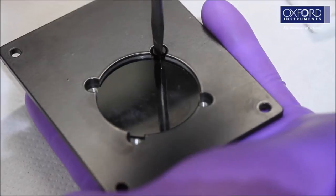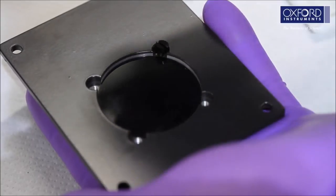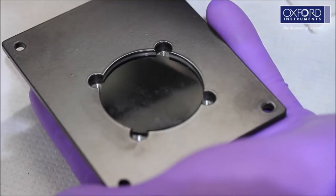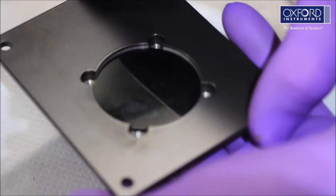Remove the four nylon screws that hold the OVC window blanks in place. Again, we would only recommend replacing the OVC window blanks with windows that you need to use for optical access.